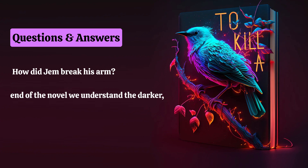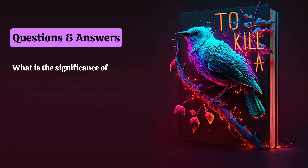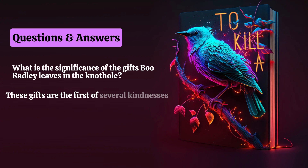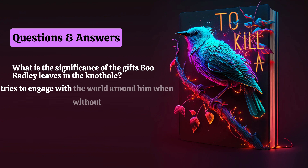What is the significance of the gifts Boo Radley leaves in the knothole? In the early chapters of the book, Jem and Scout find several small items, ranging from sticks of gum to a pocket watch, left by Boo Radley in the knothole of a tree on the Radley property. These gifts are the first of several kindnesses that Boo extends to the children, ultimately culminating in Boo killing Bob Ewell to protect Jem. The gifts also represent one of the ways that Boo tries to engage with the world around him without giving up the secrecy and privacy that he requires.